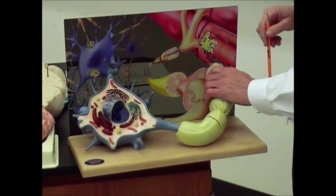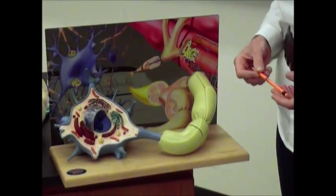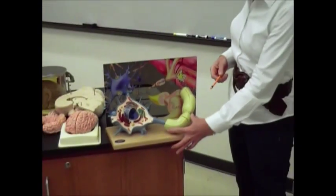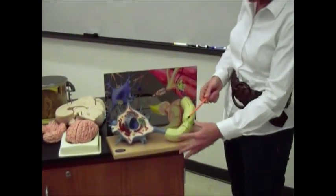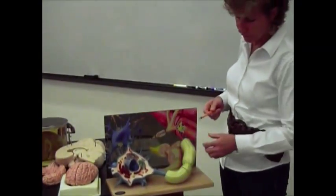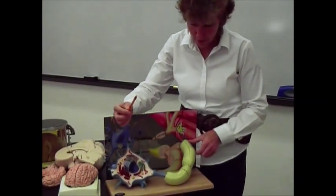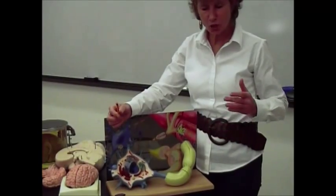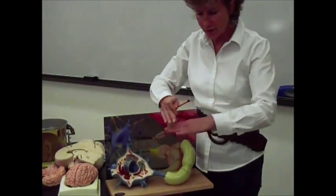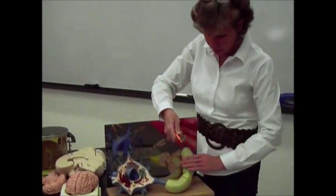Then you have these big yellow things here, and these are Schwann cells. In the peripheral nervous system, the Schwann cell is what does the myelinating or insulating of these axon fibers. So each one of these yellow things is one Schwann cell.